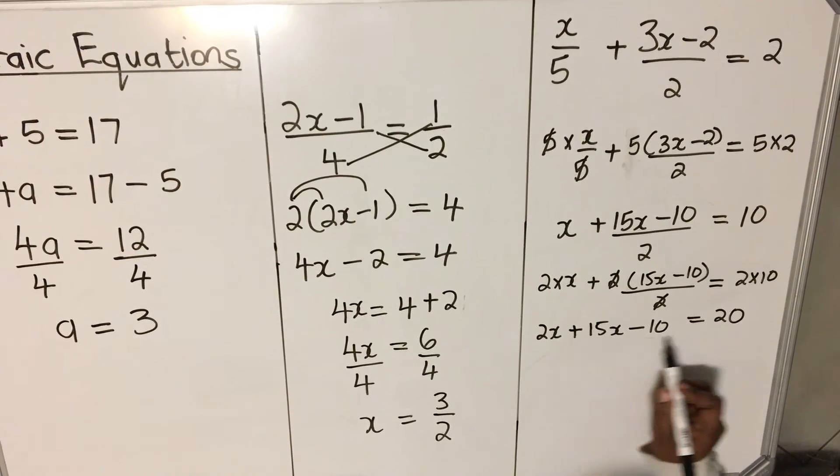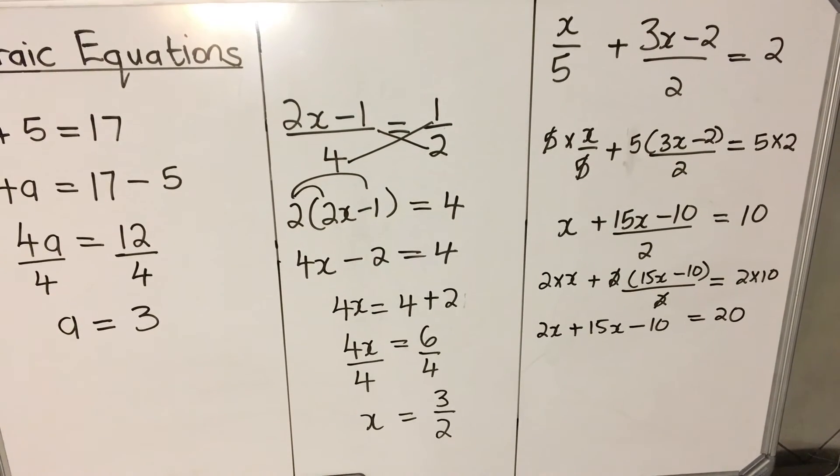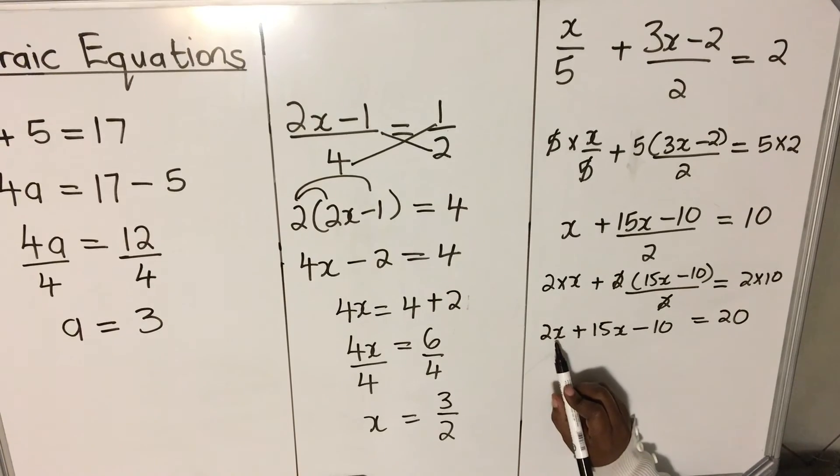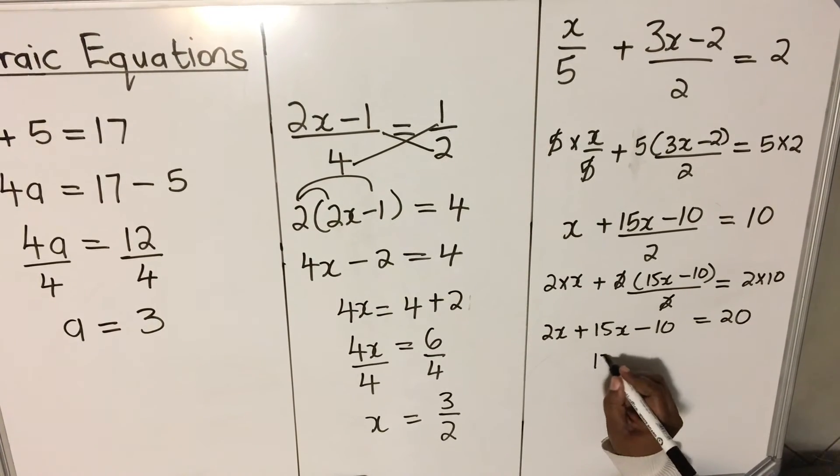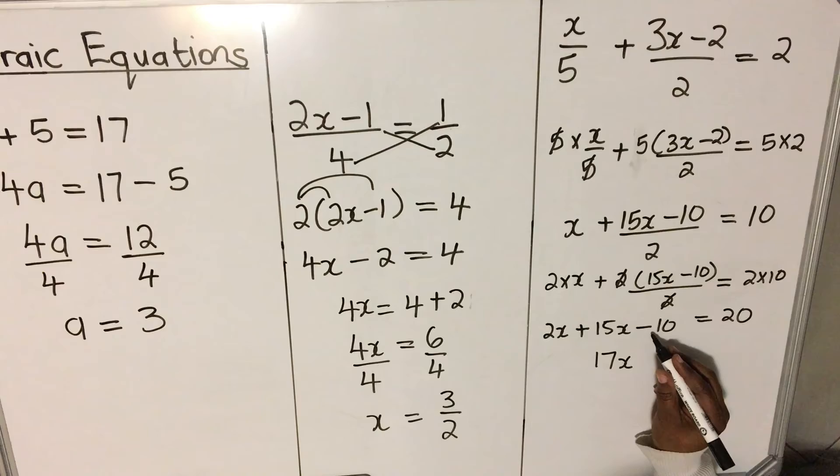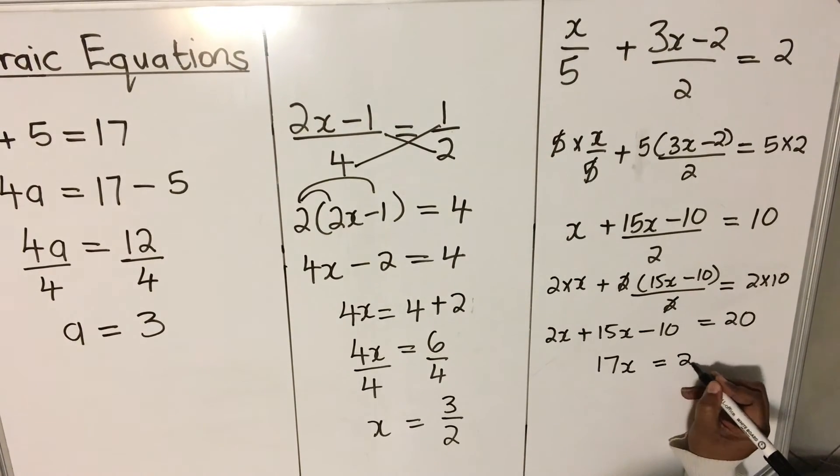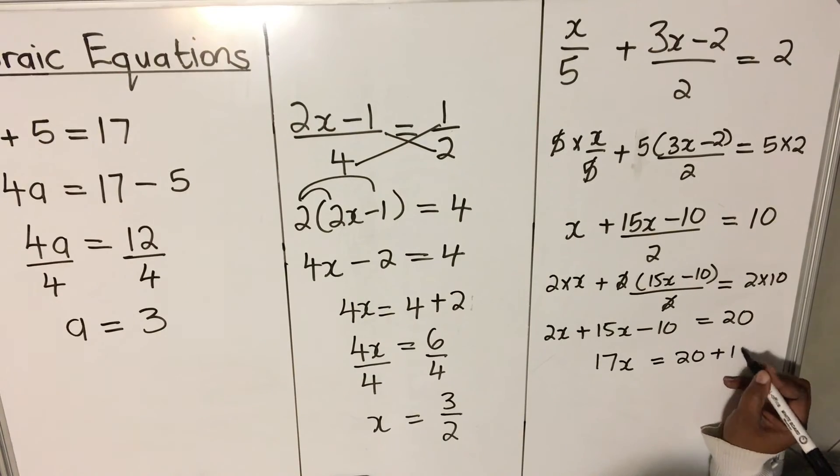Now, when we look at our equation, we don't have denominators anymore. So we can add like terms together. 2x plus 15x will give you 17x. The 10 will take it to the other side. We'll be 20 plus 10.